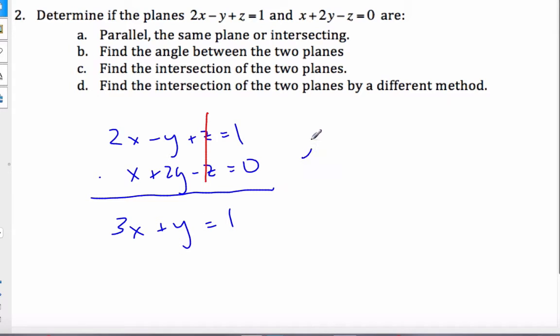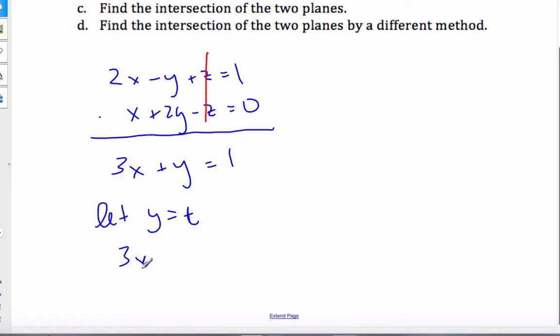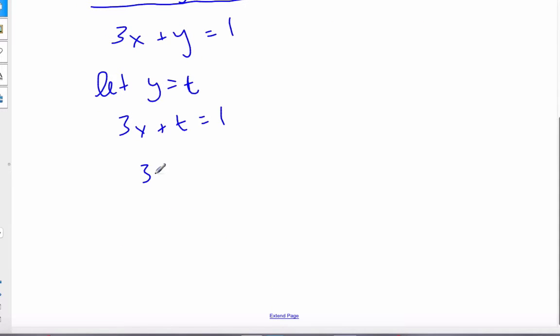There's an infinite amount of points in the intersection, so I'm going to introduce a parameter. I'm going to let y equal t. So if y equals t, I get 3x + t = 1, and 3x = 1 - t, so x will be 1/3 - 1/3t.